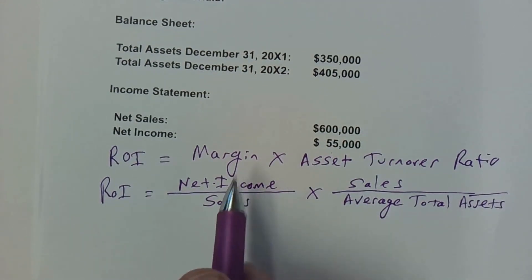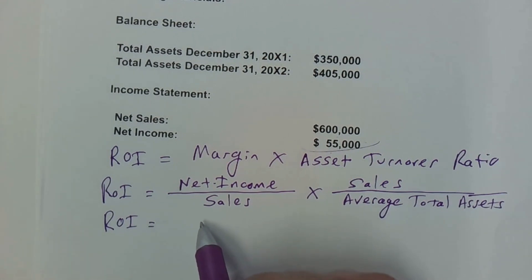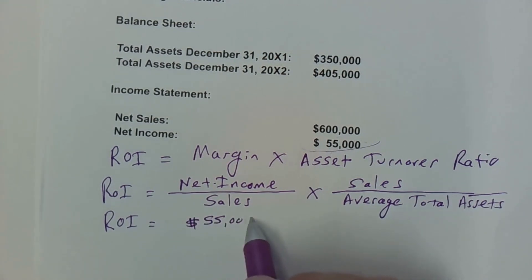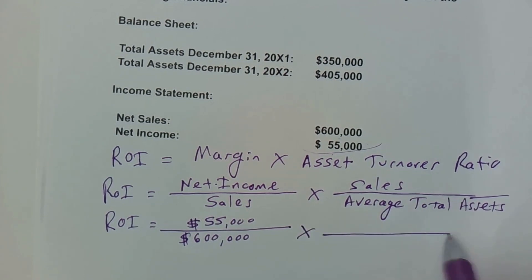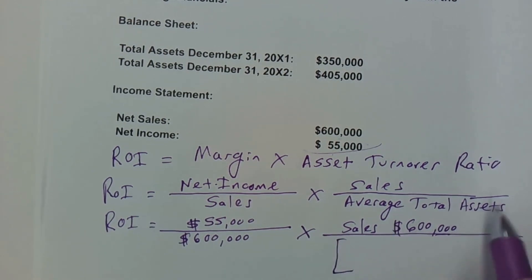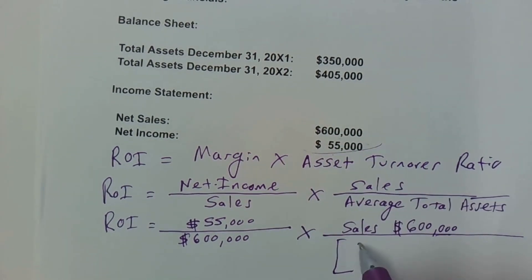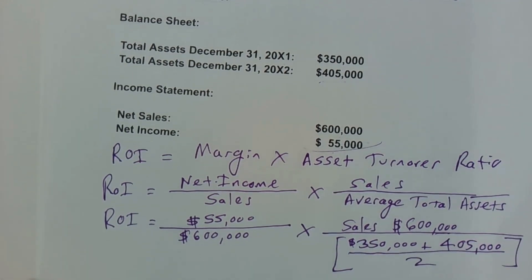Let's plug in our numbers. ROI equals net income of $55,000 over sales of $600,000, multiplied by sales of $600,000 over average total assets. To find average total assets, we take beginning assets of $350,000, add ending assets of $405,000, and divide by two.